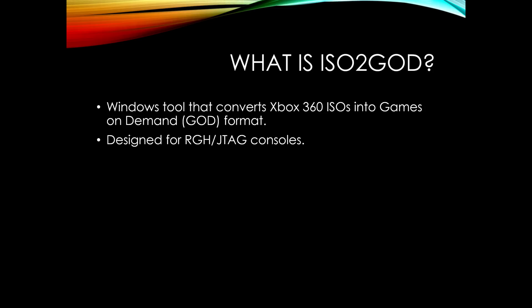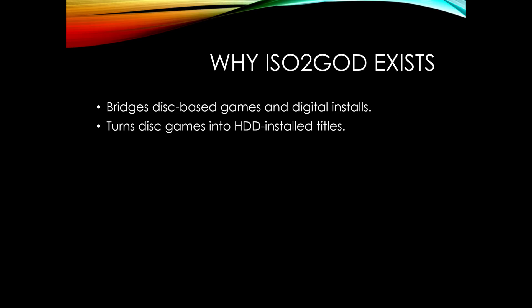ISO to GOD is a Windows application and what it does is convert an Xbox 360 ISO file into GOD format, which is known as Game on Demand. It's designed specifically for RGH and JTAG consoles and it allows the game to run digitally from your internal disk. As we know, the Xbox 360 console was built to run games either from a physical disk or as a digital download — ISO to GOD bridges that gap by converting the game into a digital installation, allowing you to run it on your internal drive rather than needing a disk.